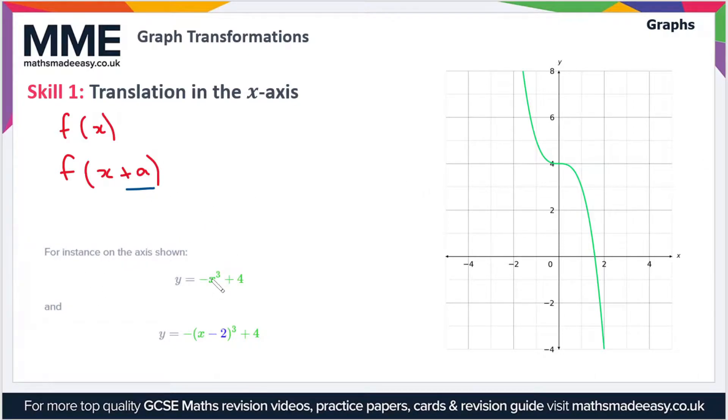For instance, on the axis shown we have the graph y = -x³ + 4. If we want to have the graph of y = -(x - 2)³ + 4, well we shift by a in the negative x direction, which means that instead of moving minus 2, we move plus 2 to the right.